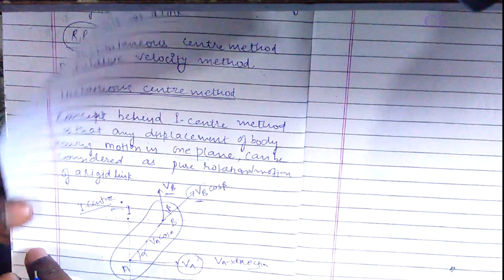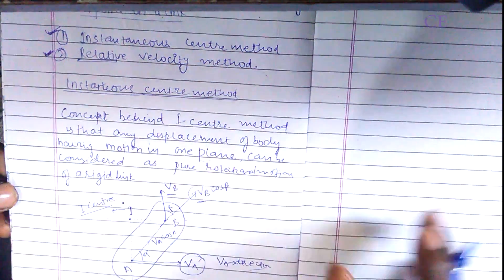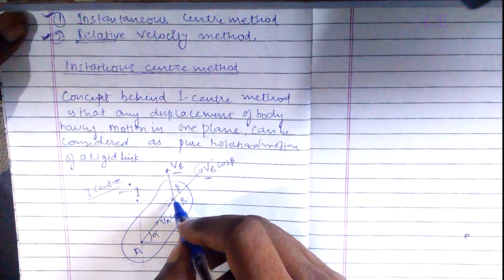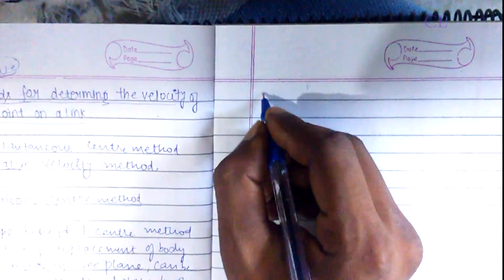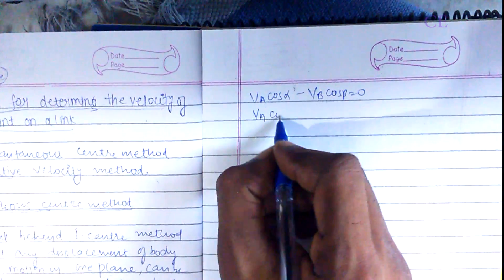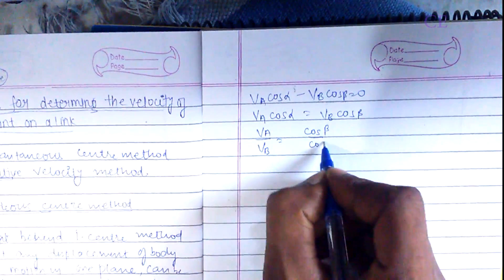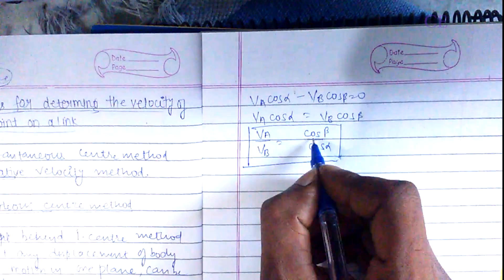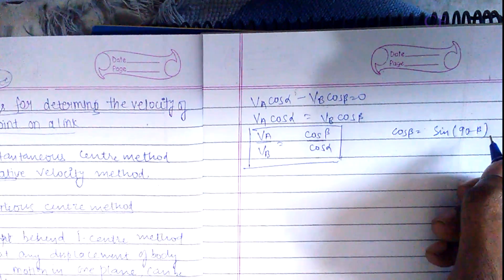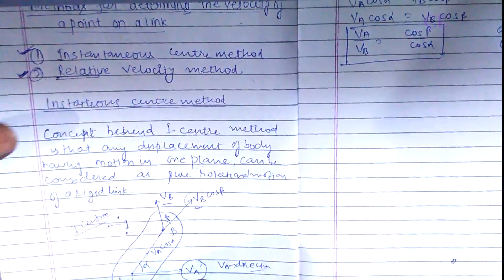From the diagram, the relative motion between A and B is zero because they both lie on the same rigid link. Since we have resolved V_A and V_B in the same direction, it follows that V_A cos(alpha) minus V_B cos(beta) equals zero. Therefore, V_A cos(alpha) equals V_B cos(beta), giving us V_A upon V_B equals cos(beta) upon cos(alpha). We can rewrite cos(beta) as sin(90 minus beta) and cos(alpha) as sin(90 minus alpha).